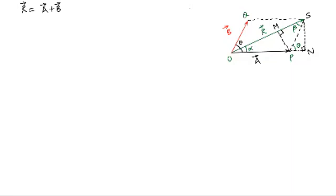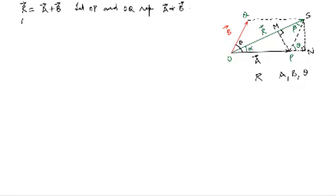What do we want to do? We intend to find out a relationship for the magnitude of the resultant in terms of the magnitude of vector A, magnitude of vector B, and the angle theta between the two vectors. Let OP and OQ represent two vectors A and B, with angle theta between them. Using the parallelogram method, vector R equals vector A plus vector B.